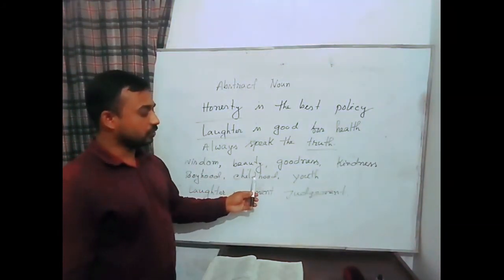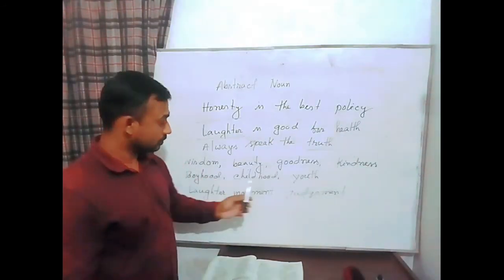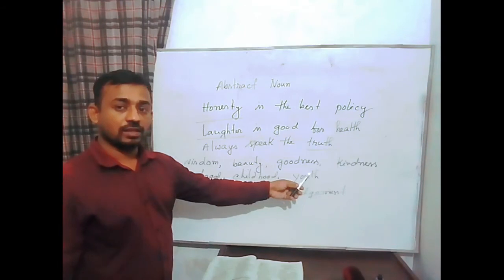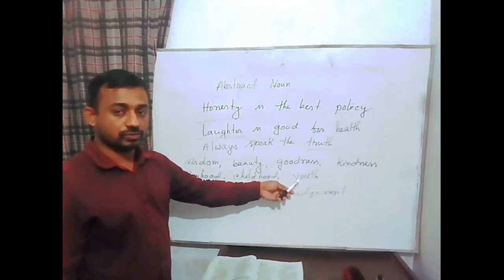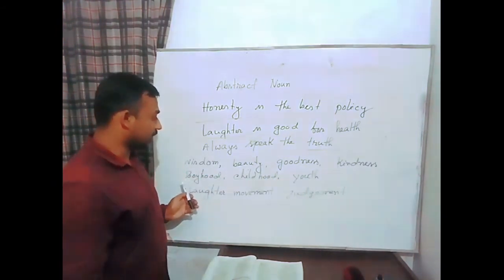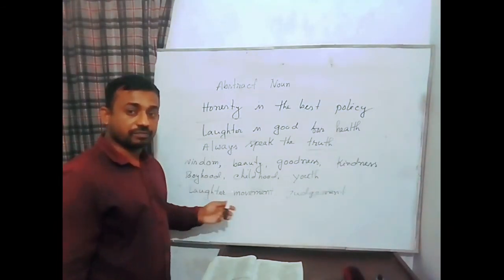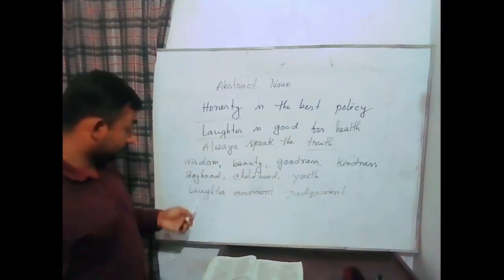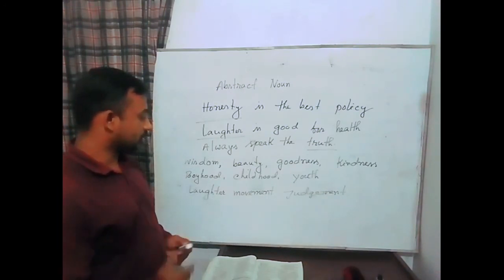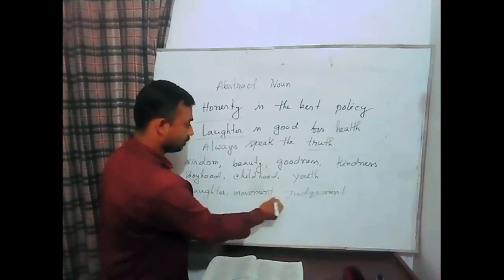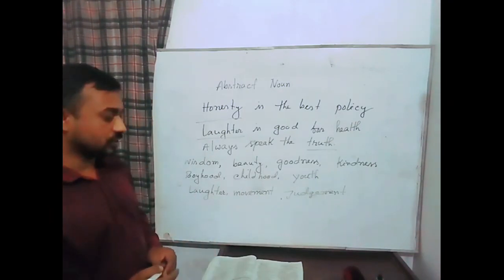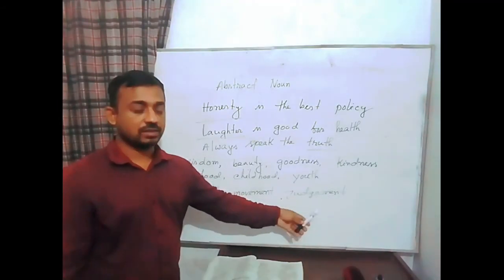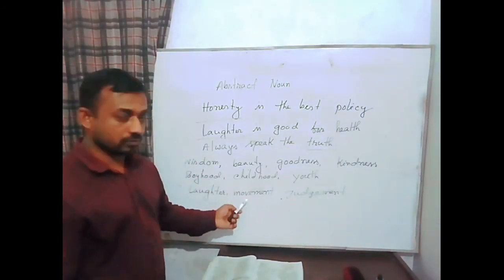More abstract nouns include: boyhood, childhood, youth — these words are also abstract nouns and they give us the state of age of people. And in the third group: laughter, movement, and judgment — these are abstract nouns representing actions.